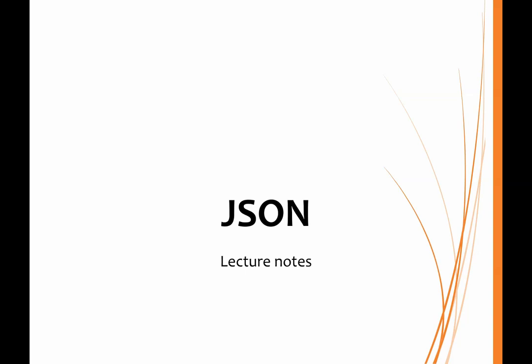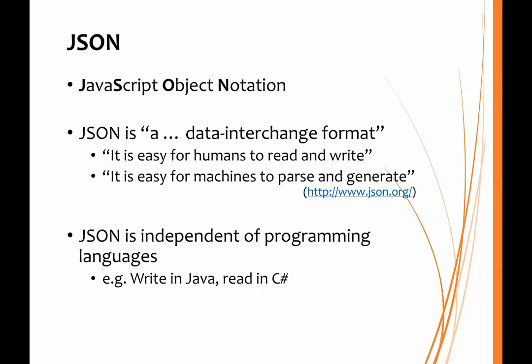In this lecture, we're going to look at JSON, which is the JavaScript Object Notation. It has been developed as a data interchange mechanism. Because it's plain text, it's really easy for humans to read and write it, but it's also easy for machines to parse and generate, which means that it's going to be very useful.